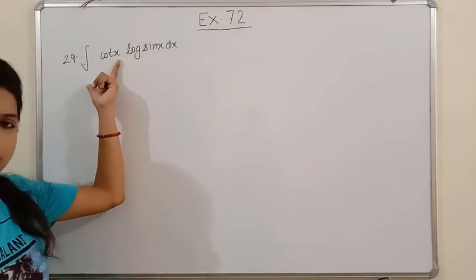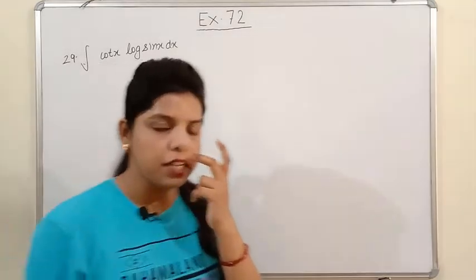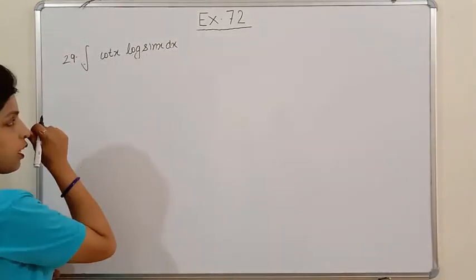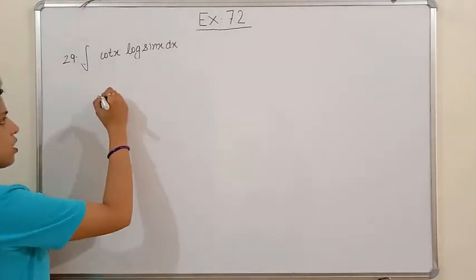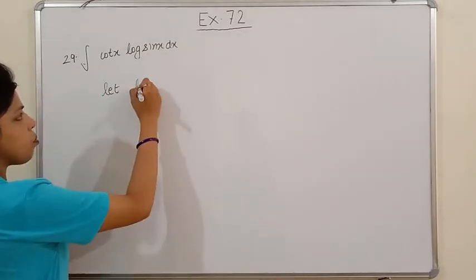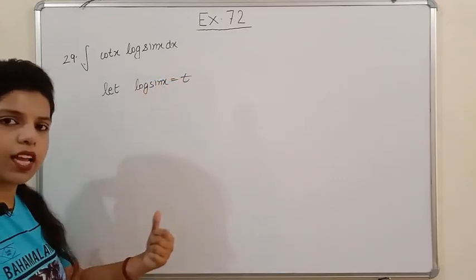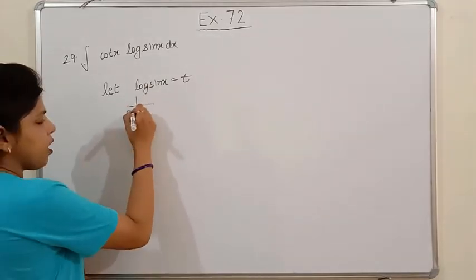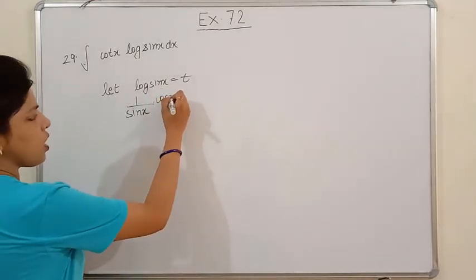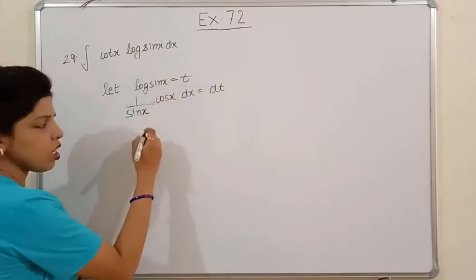Next is question 29: integration of cotx·log(sinx) dx. First identify the function and its derivative. The function here is log(sinx); its derivative gives cotx. There is no square root or radical power, so we simply put log(sinx) = t. The derivative of log(sinx) is (1/sinx)·cosx dx = (cosx/sinx)dx = cotx dx, which equals dt.